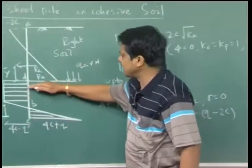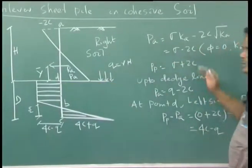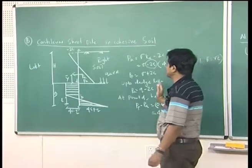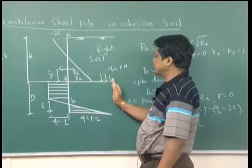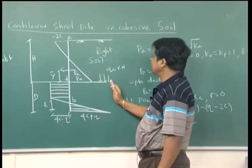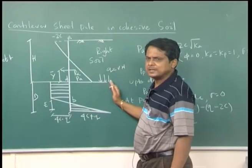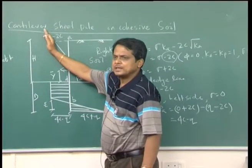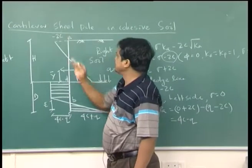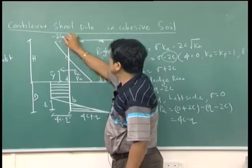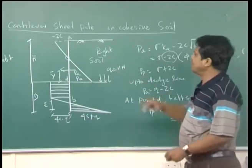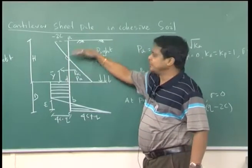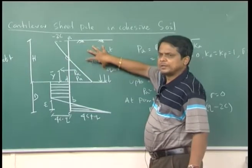The term γZ gives the pressure, and the −2C component means tension — the 2C part acts outside as tension. This describes the earth pressure variation from A to D for this soil above the dredge line. Now let us consider the earth pressure starting from point D downward.